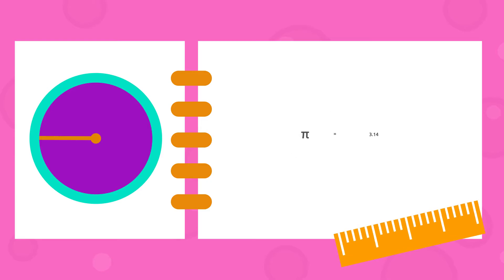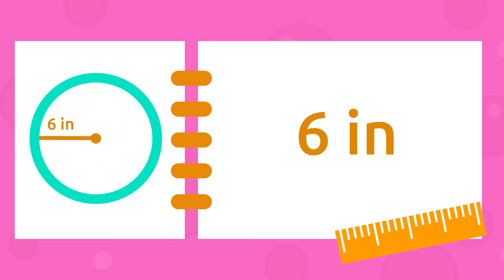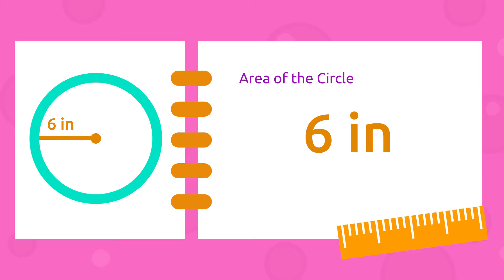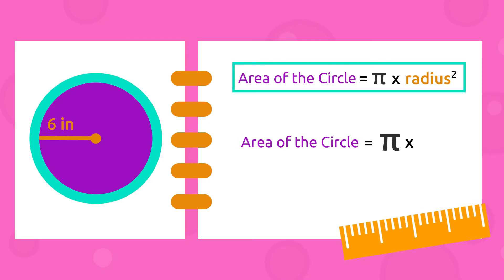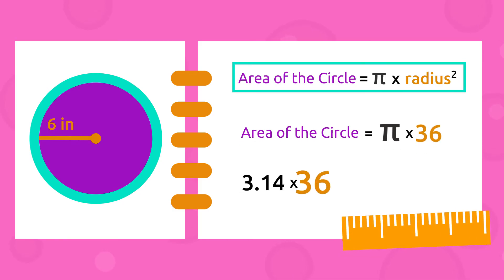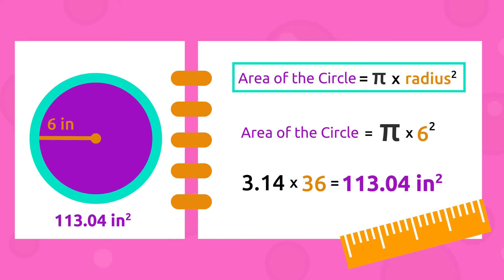Let's practice! The radius of this circle is 6 inches. To find the area, we multiply pi by the radius squared—in other words, multiply it by itself, then multiply the result by pi. So 6 squared equals 36, and 36 multiplied by 3.14 equals 113.04.